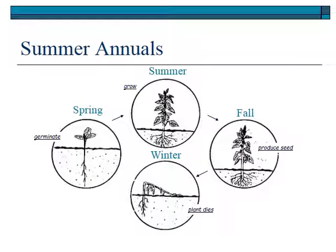Summer annuals, of course, as the name would suggest, grow in the summer. They germinate in the spring, grow all summer long, produce their seeds in late summer or fall, and then die. They don't persist through the winter — they spend most of their growth in the summer.